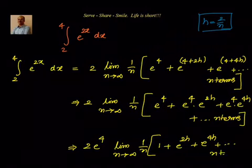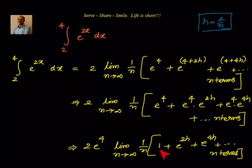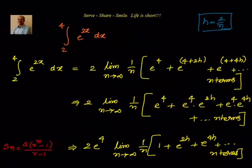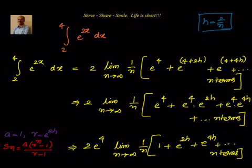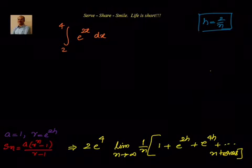We can see clearly that 1 + e power 2h + e power 4h + ... up to n terms is a geometric progression. The sum of n terms of a GP is S(n) = a · (r^n − 1) / (r − 1). Here a = 1 and r = e power 2h.